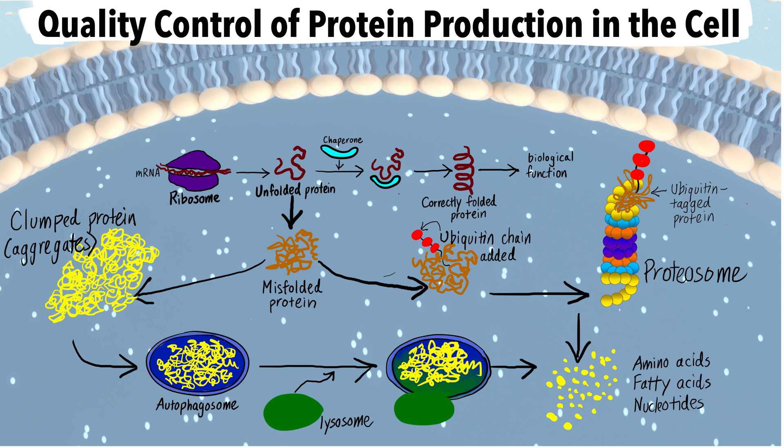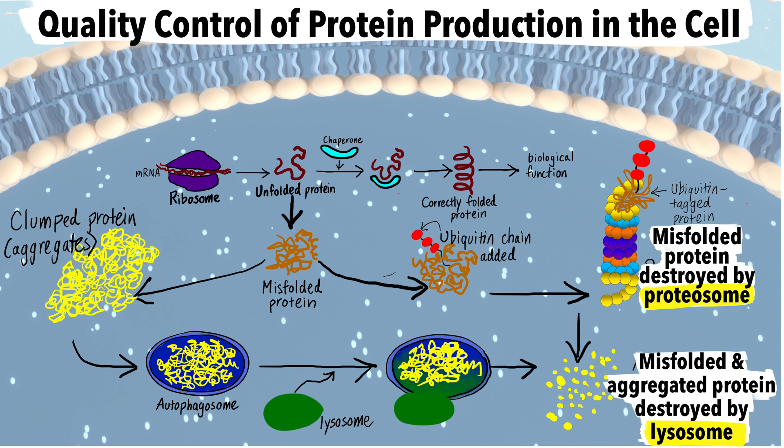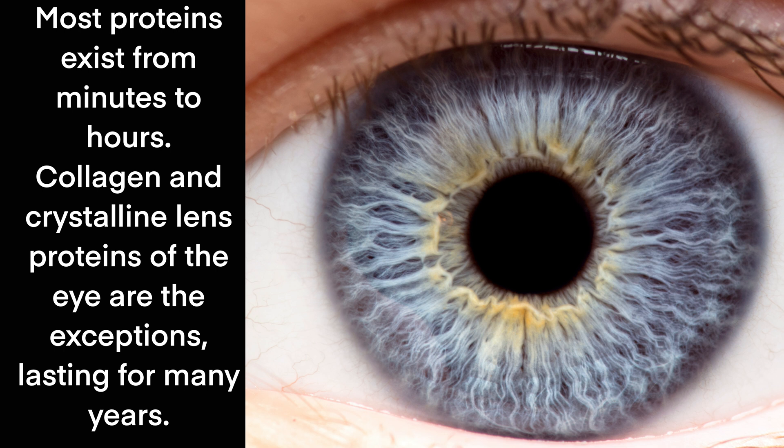Approximately 400 grams of protein are made and degraded every day in the human body. The half-lives of these proteins range from minutes to many hours. Collagen and crystalline lens proteins are the exceptions, lasting for many years.